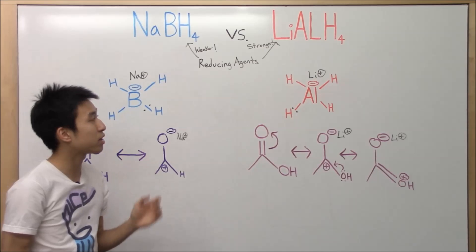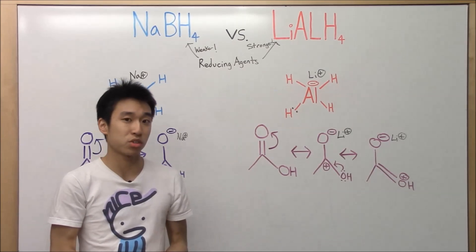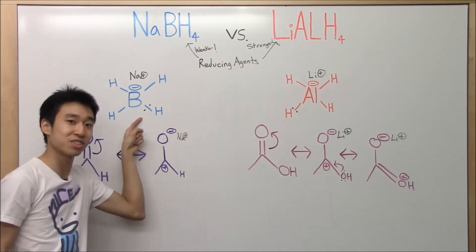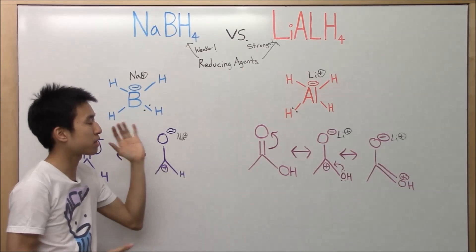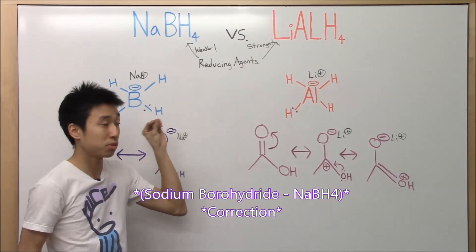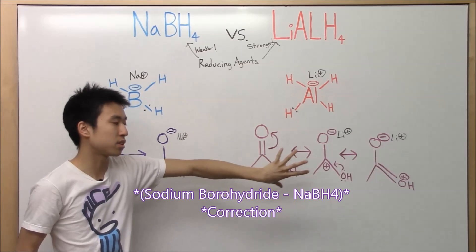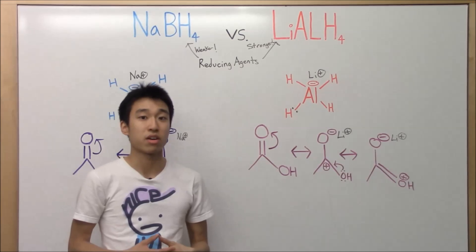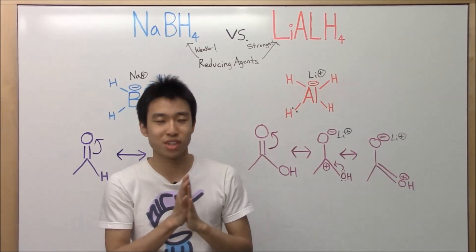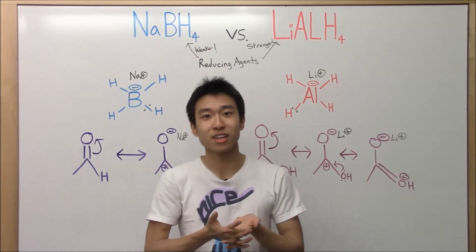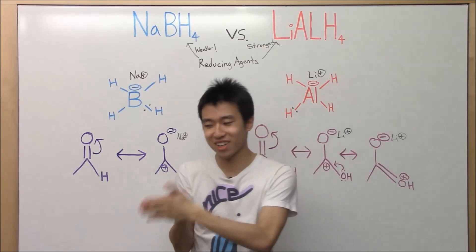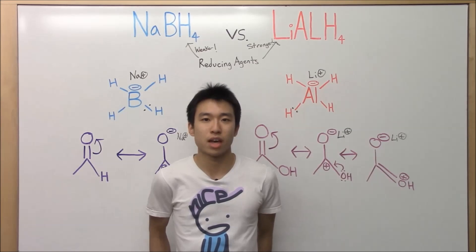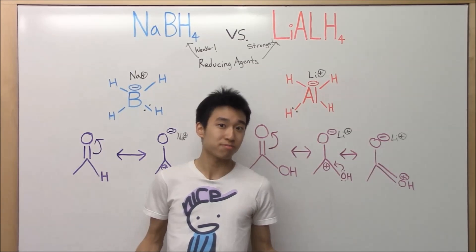In conclusion, sodium borohydride is not as strong as lithium aluminum hydride because: one, it has a stronger boron-hydrogen bond, so the hydrogen is not as reactive; two, if lithium aluminum hydride tries to react with a carboxylic acid, the acid has a good way of hiding the positive charge via an extra resonance structure; and three, sodium is not as good a counter-ion as lithium. I hope this video was helpful! If you like it, subscribe for more videos, and I'll see you in my Wolff-Kishner video.